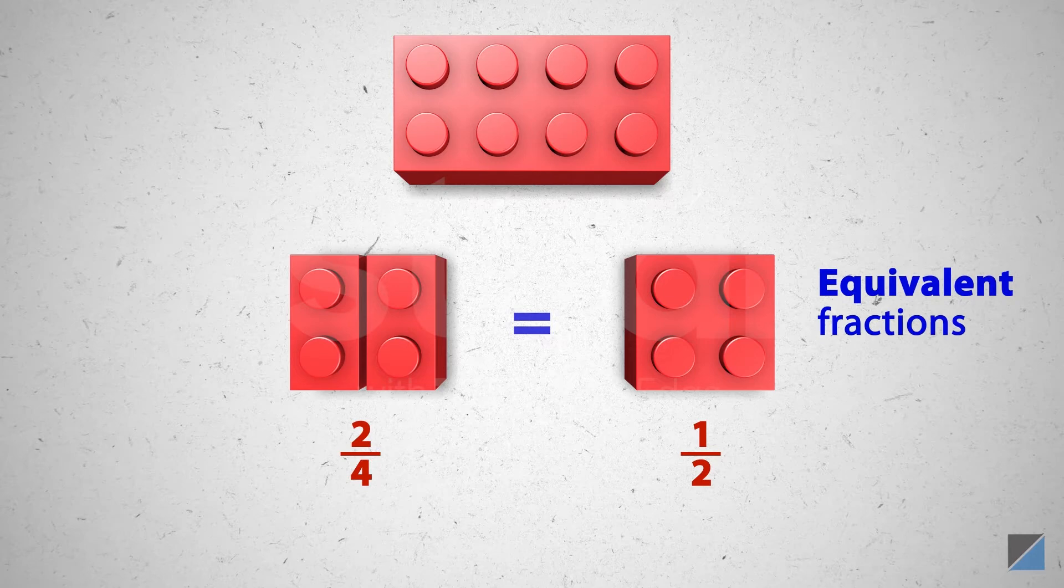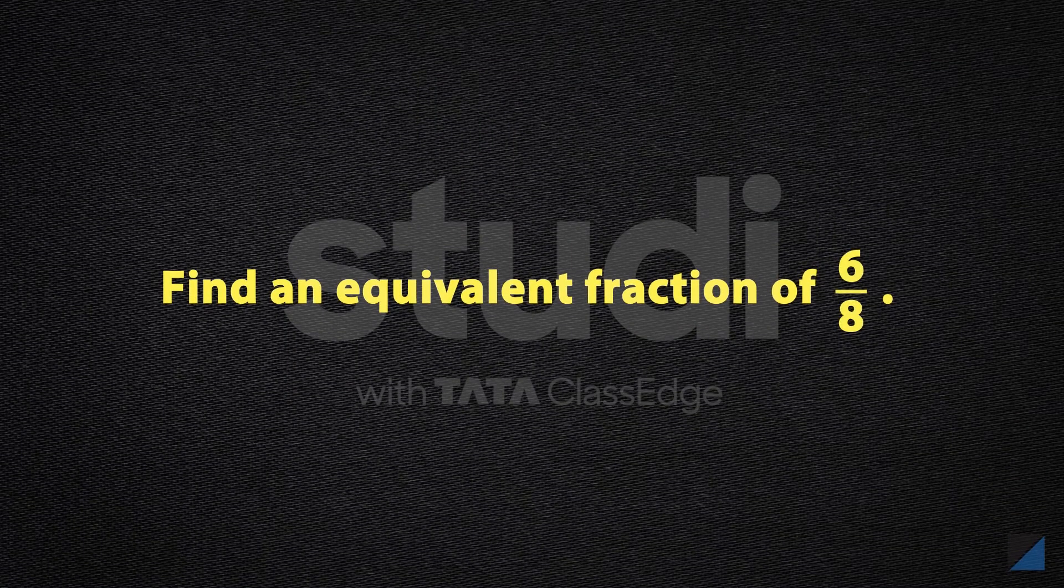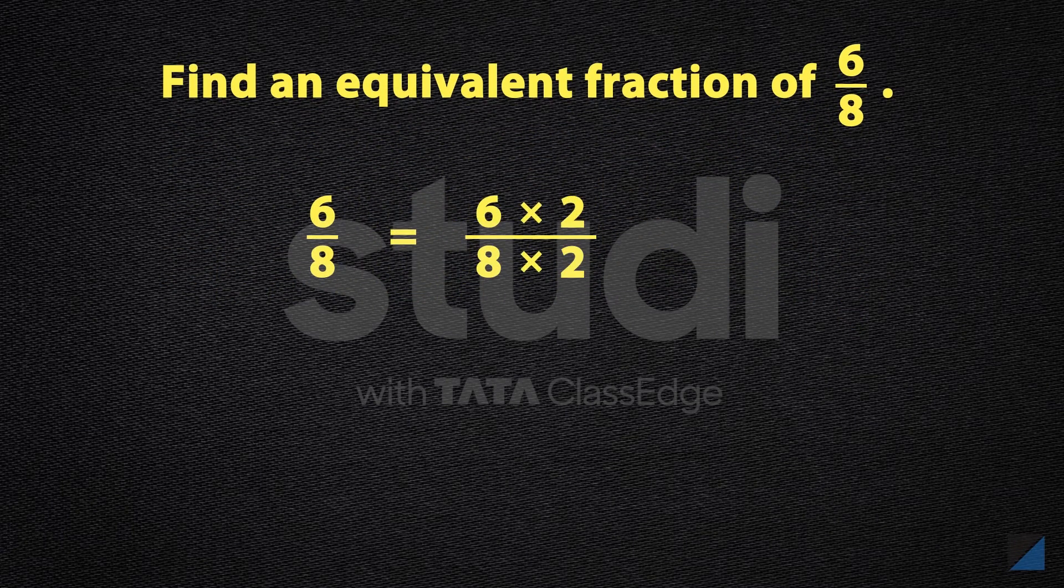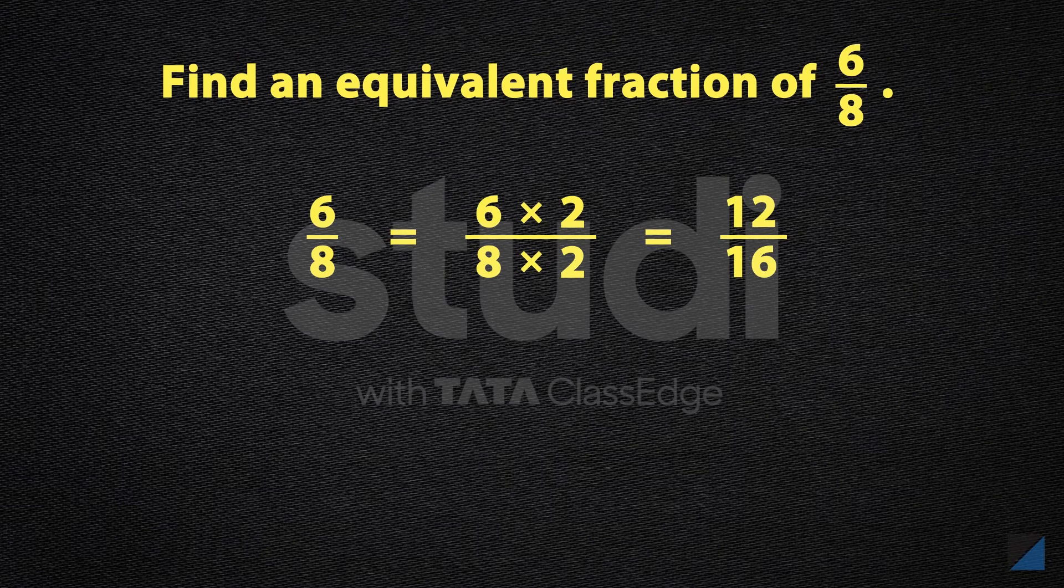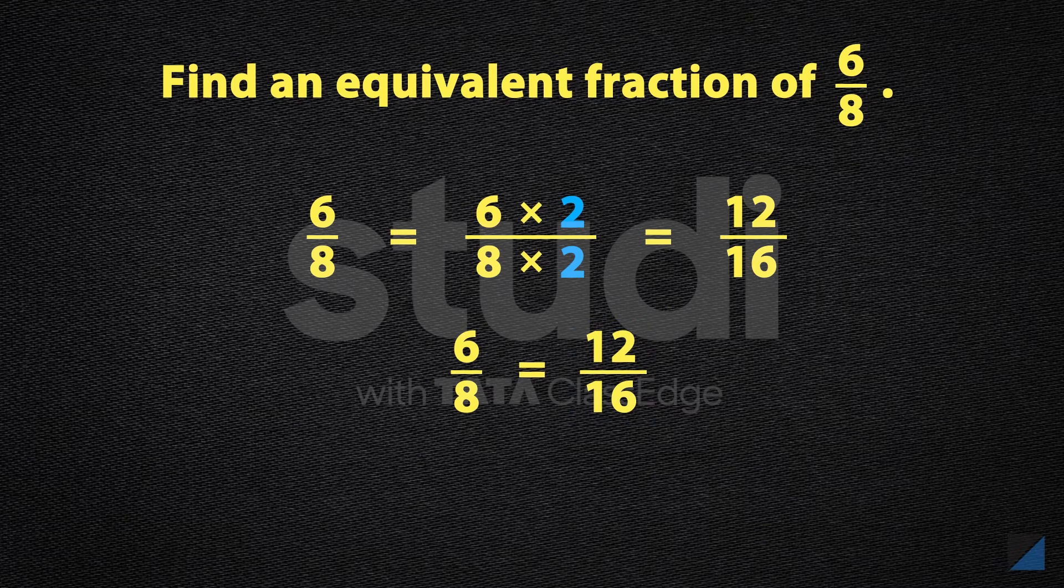How can we find equivalent fractions of a given fraction mathematically? You just multiply the numerator and the denominator with the same number. Let's say 2. So 12 upon 16 is one of the equivalent fractions of 6 upon 8.